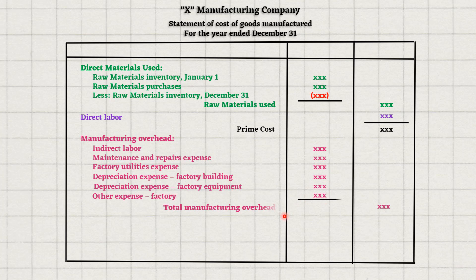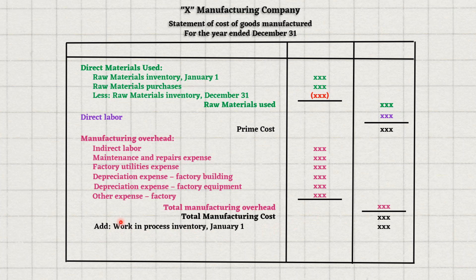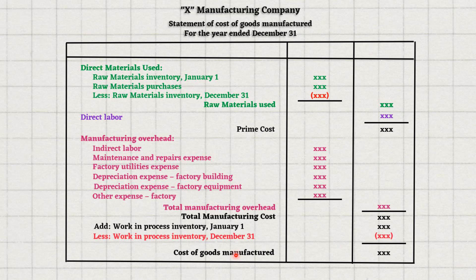You will also find some depreciations in the factory and other factory-related items — all of them are called total manufacturing overhead. We will add prime cost and manufacturing overhead cost, and that gives us total manufacturing cost. This is the cost of all products produced during the year. But some products might still be processing — half done or waiting for packaging — we call them work in process inventory. We add the beginning work in process inventory and deduct the ending work in process inventory, and that gives us the cost of goods manufactured.